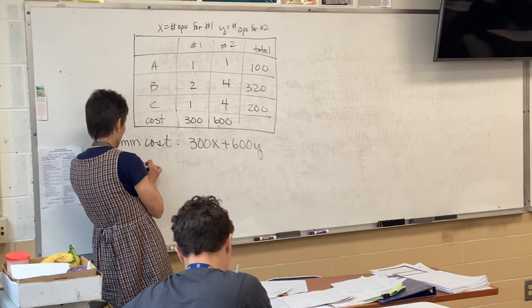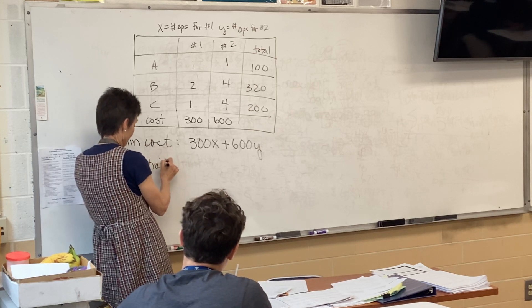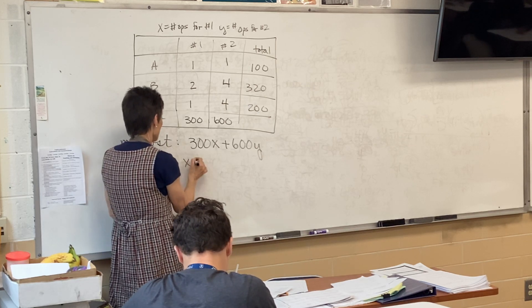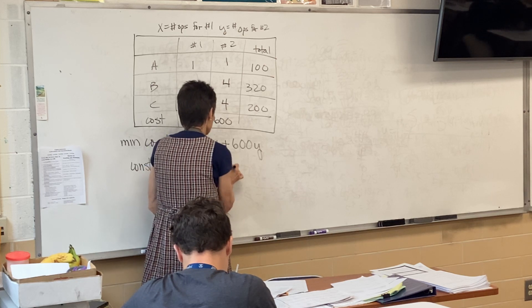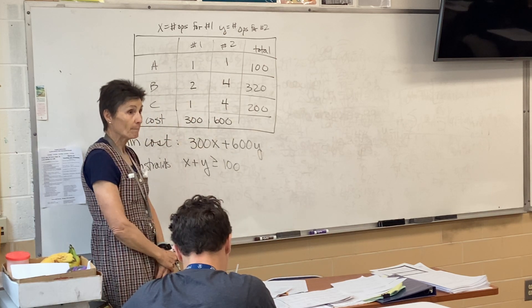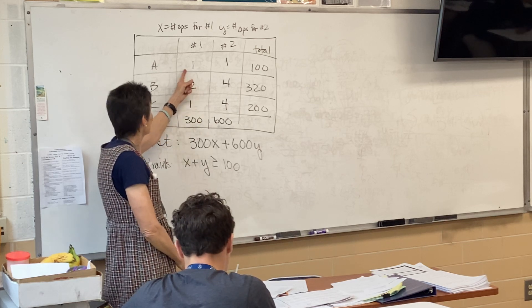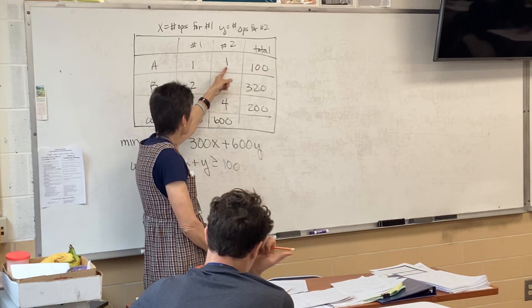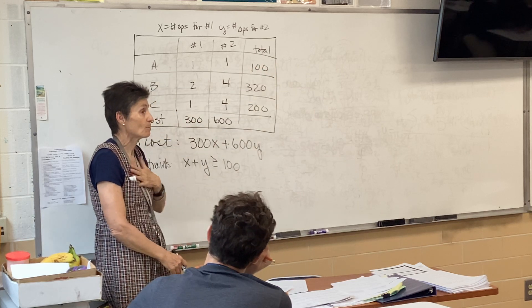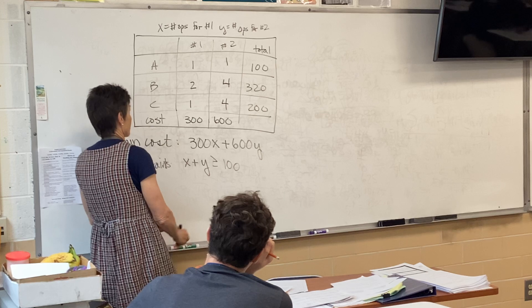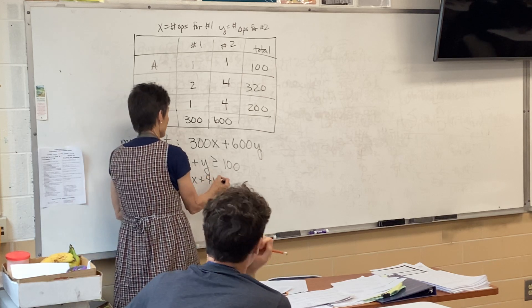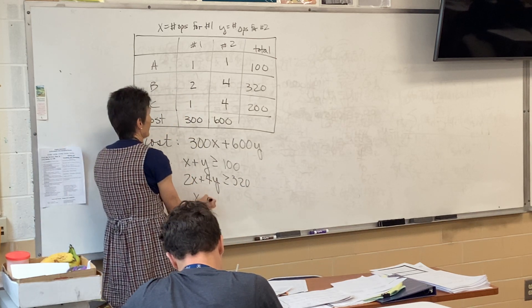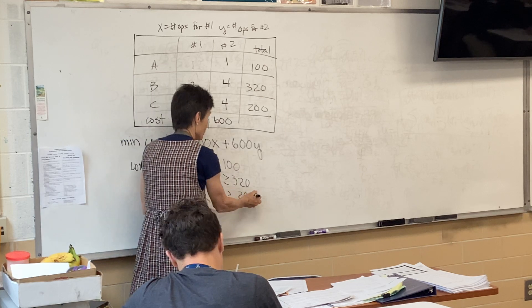Okay. Alright. So what kind of constraints do we have? X plus y is greater than or equal to 100. What did you say? X plus y is greater than or equal to 100. Does that make sense to you? Yep. Because every unit A, for unit A, whatever that is, grade A gasoline or whatever, 1x and 1y have to be at least 100. The customer needs 100. Alright. What about another constraint?